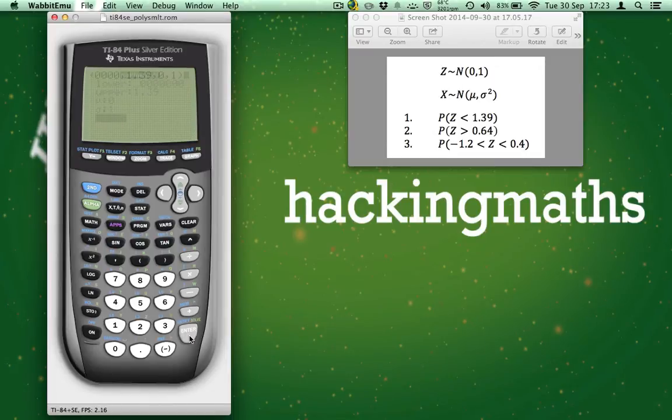Make sure paste is highlighted. Press Enter twice, and then this gives us the solution. We get an area of 0.917735, so approximately 0.918, or 91.8% of the curve is below 1.39.